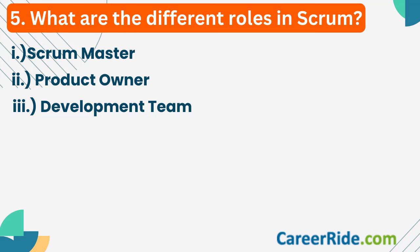Question number five: what are the different roles in Scrum? There are three primary roles in Scrum, together called the Scrum team. Number one, Scrum master — this person is not actually a project coordinator, manager or boss; he basically helps the team with proper adoption of Scrum. The second is product owner, the person who works as the voice of the client to the development team. He defines and prioritizes the product backlog, makes decisions on features to include in each sprint, and ensures the product meets client expectations.